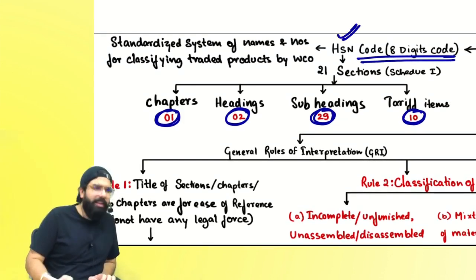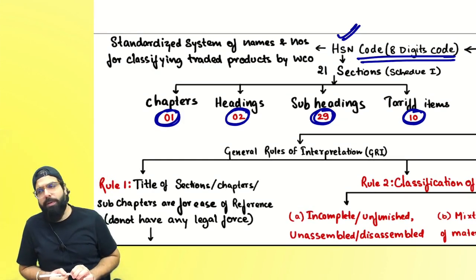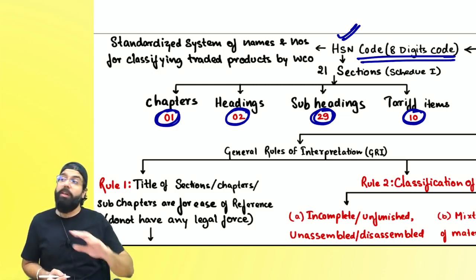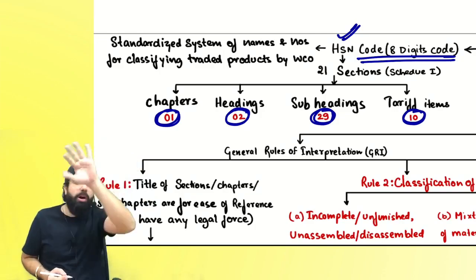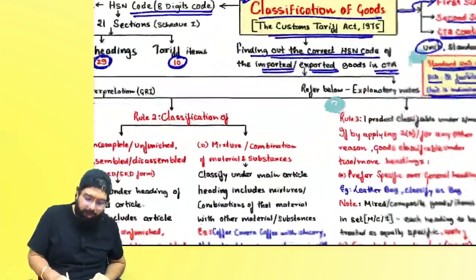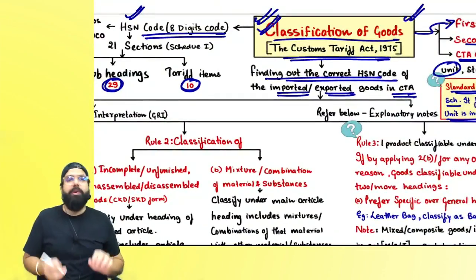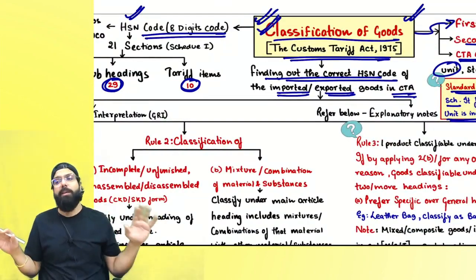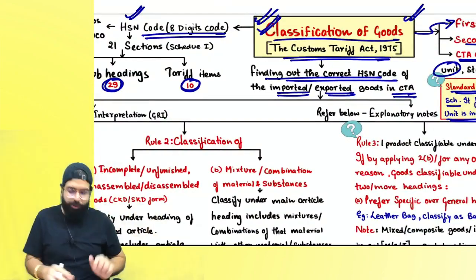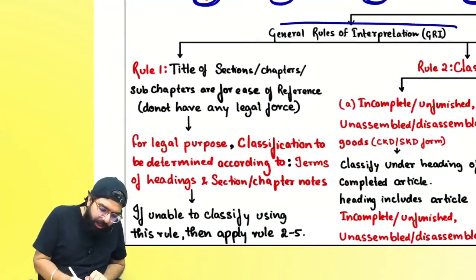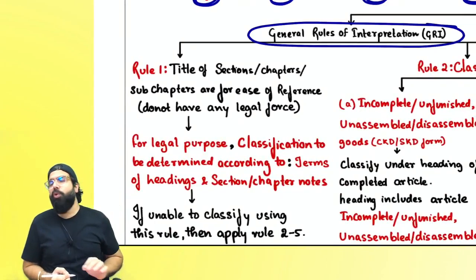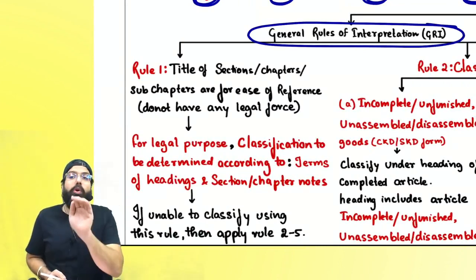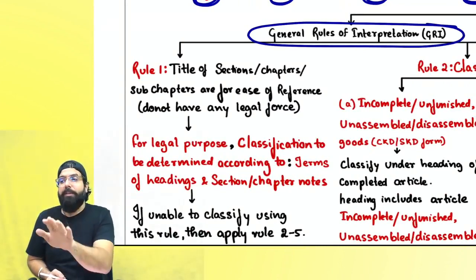HSN code is basically a standardized system of name and number given by the World Customs Organization for traded products which are traded among countries. Now when you are doing classification, you need two things: one is the General Rules of Interpretation and the other is the Explanatory Notes. There are six rules of interpretation on how to interpret the Custom Tariff Act.